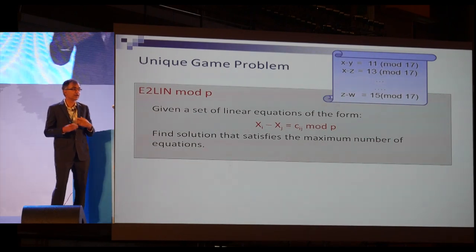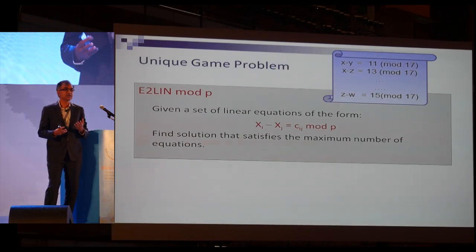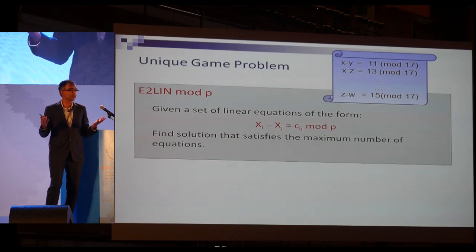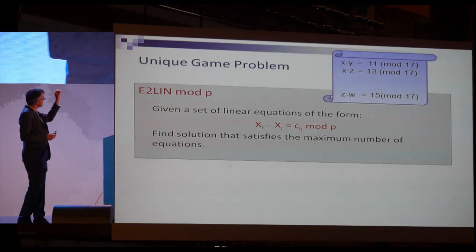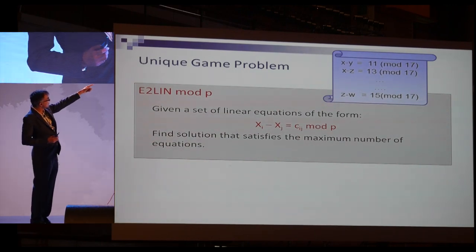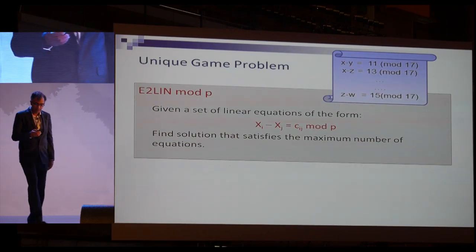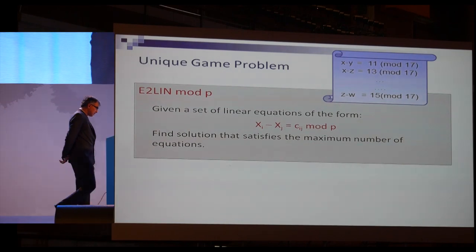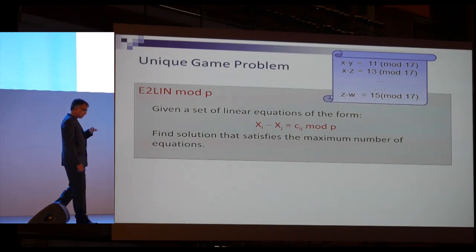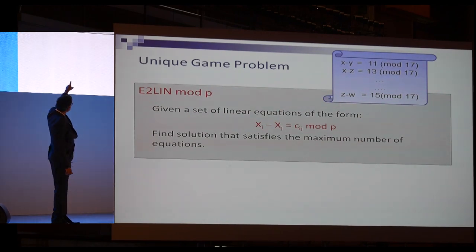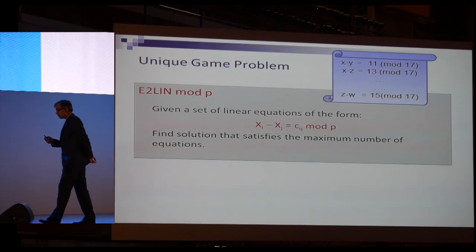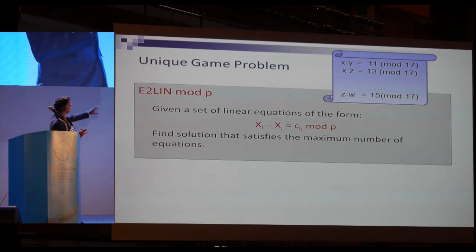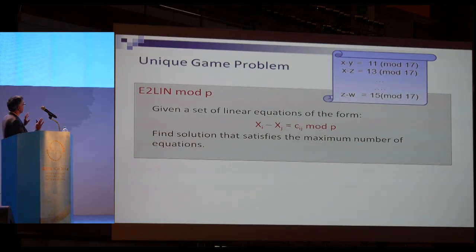The system of equations is infeasible and you're trying to find the largest feasible subsystem. There's a simple reason your high school teacher didn't mention this — it's NP-complete. Khot's unique games problem is a seemingly simple case of this, where each equation has the form: difference of two variables equals a constant. It's called 'unique games' because if the equation is satisfied, for each value of x_i there is a unique value of x_j that satisfies it. Subsequent work has shown this form is sufficiently general.